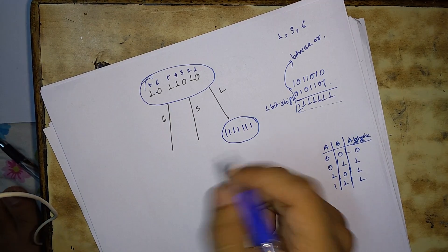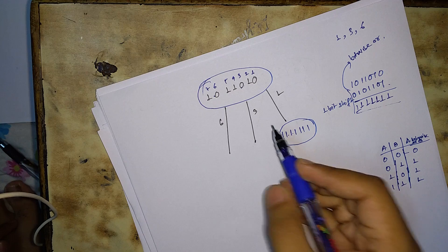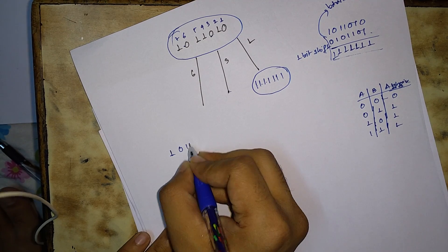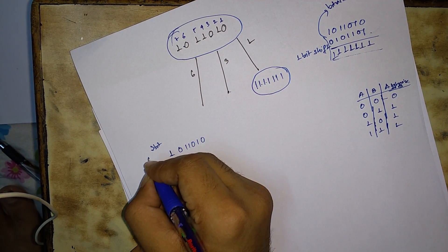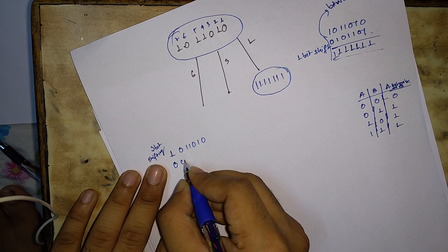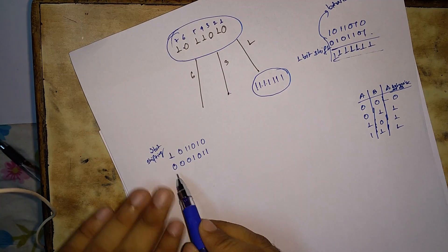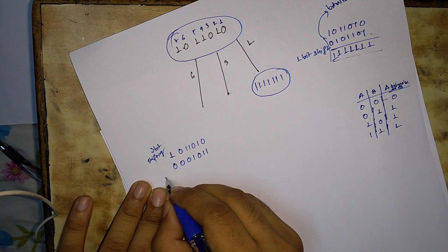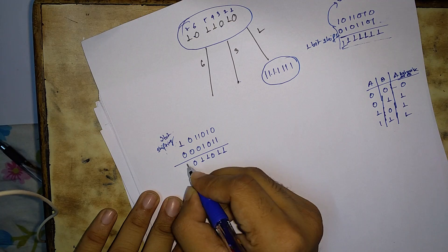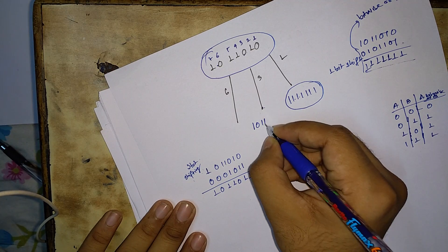Similarly, we have to do it for the position with zero at three, which means we perform a three-bit shift on the original collision vector. After three-bit shifting we get zeros in the first three positions and the remaining bits of the original vector. Performing bitwise OR gives us: one, zero, one, one, zero, one, one.